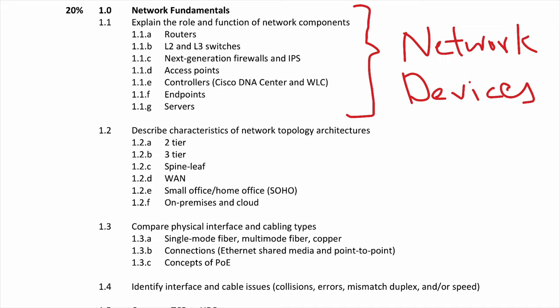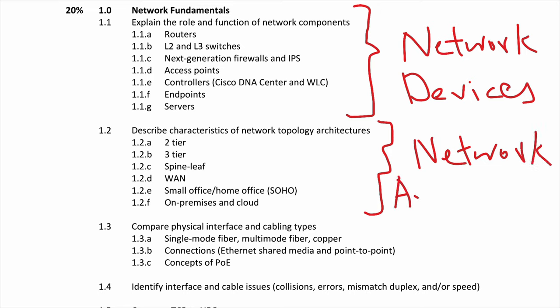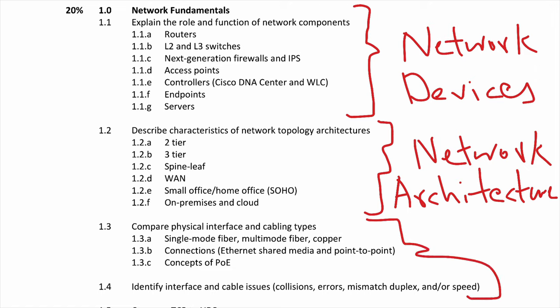Section 1.2 is network architecture and design, where we get into the two-tier architecture and spine-leaf. Underneath that is the different types of cabling and media — things like copper cabling versus fiber optic cabling, Ethernet, Power over Ethernet, and things of that nature.